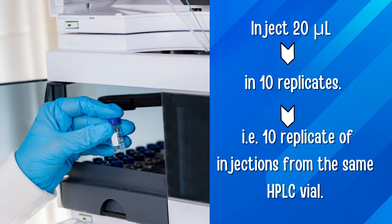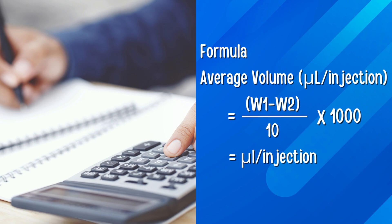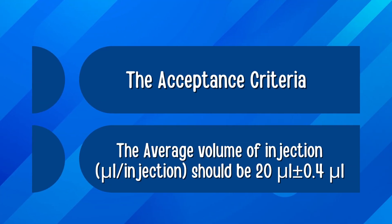Inject 20 microliters from the HPLC vial and repeat it for 10 times, that is 10 replicates of injections from the same HPLC vial. After completion of 10 injections, remove the vial and weigh again to get final weight as W2. Now calculate the average volume in microliters injected per injection using the formula: average volume = (W1 − W2) / 10 × 1000, which gives microliters per injection. The acceptance criteria is the average volume for 10 injections of 20 µl should be within ±0.4 µl.